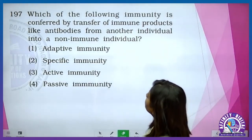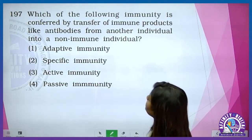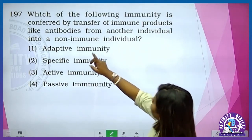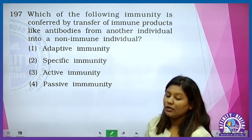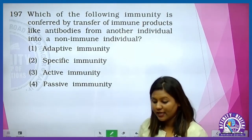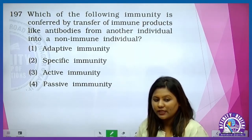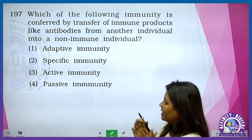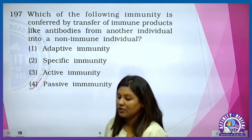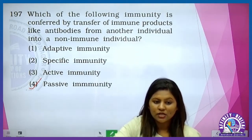Which immunity is conferred by the transfer of immune products like antibodies from one individual into a non-immune individual? Ek individual se dusre individual mein agar hum antibodies ko transfer karenge, to us individual ko passive immunity provide kare hain. Ek maa apne bacche ko jab antibodies deti hai, she is giving the baby passive immunity.